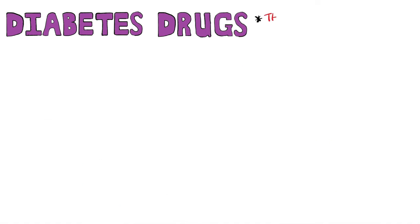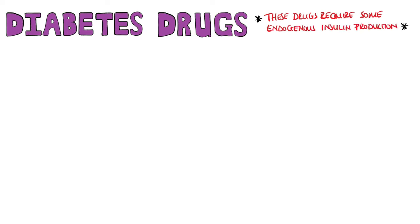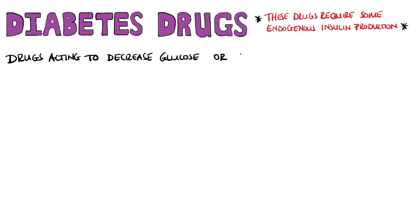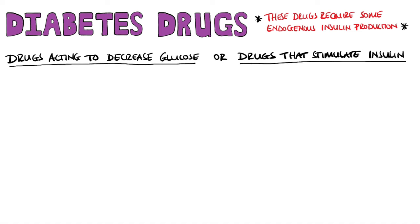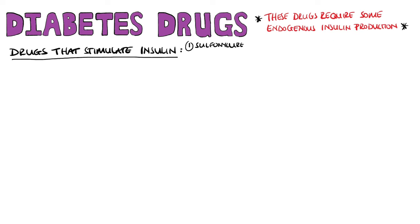The remaining drugs usually require some form of endogenous insulin release and are therefore mostly used in type 2 diabetics. We can split these into drugs that lower glucose and drugs that stimulate insulin. The drugs that stimulate insulin include the sulfonylureas, meglitinides, GLP-1 agonists, and the gliptins.